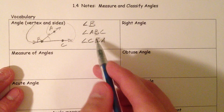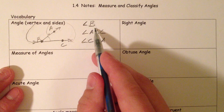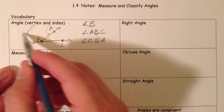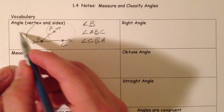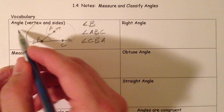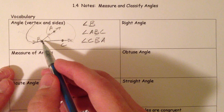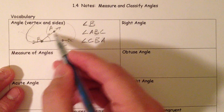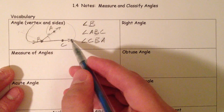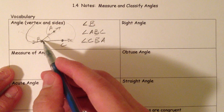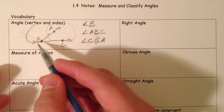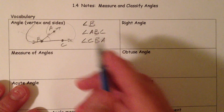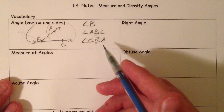When would you use three letters over one letter? If you had another angle touching it and you didn't know if 'angle B' referred to that one or this one. So if there's some confusion about which angle you might be talking about, you'd better include all three letters.